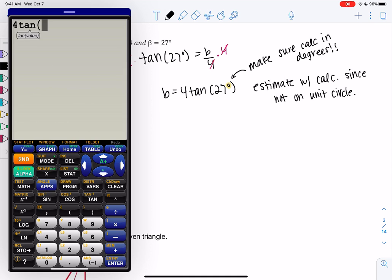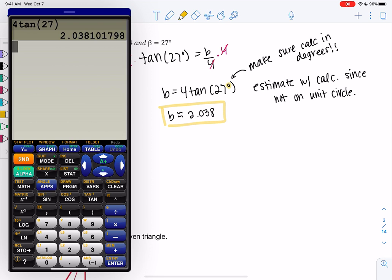So I'm just going to type 4 tangent of 27, and we get 2.038. So this is considered an estimate because we had to round. This is no longer an exact answer.